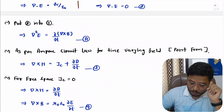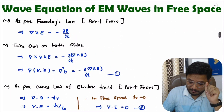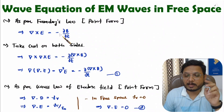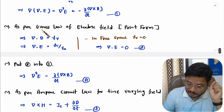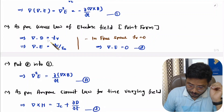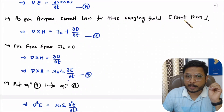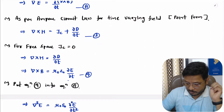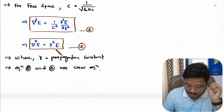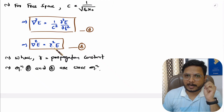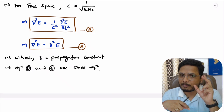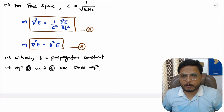Always remember: when you want to derive the wave equation, we use Maxwell's equations. Here we used the point form of Faraday's law, then Gauss's law for electric field in point form where rho V equals zero for free space, and then Ampere's circuit law for time-varying fields in point form where JC equals zero for free space. After substituting all this data, we conclude that the wave equation is del square E equals gamma square E, where gamma is the propagation constant. Maxwell's equations are very essential to derive the wave equation.